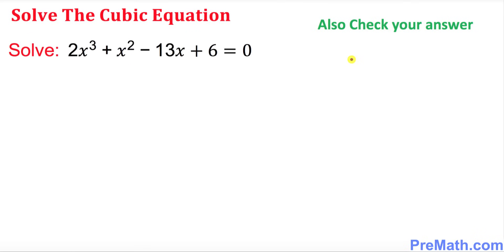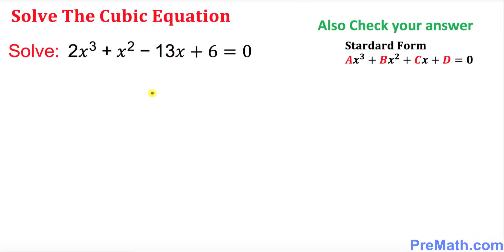Hello again everyone. In this video tutorial we are going to solve a given cubic equation and at the end we are going to check our answer as well. To make things simple, keep in mind that our original equation should match this standard form. Comparing it, we get a = 2, b = 1, c = -13, and d = +6.